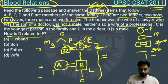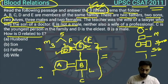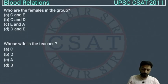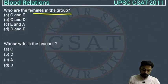Question 1: How is D related to E? D is the husband of E, so the answer is option A. Question 2: Who are the females in the group? There are two females — A is a female and E is a female. So the answer will be E and A, which is option C.